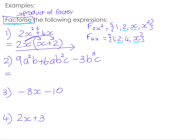For Example 2, considering coefficients 9, 6, and 3, the highest number that goes into all three is 3. Looking at the variables: we have a squared and a, but a is missing from one term, so a is not common — it must appear in every single term. Looking at the b's, we have b, b squared, and b cubed, so the highest power of b common to all three is just b. Looking at the c's, c appears in two terms but is missing from one, so c is not common. Our common factor is just 3b.